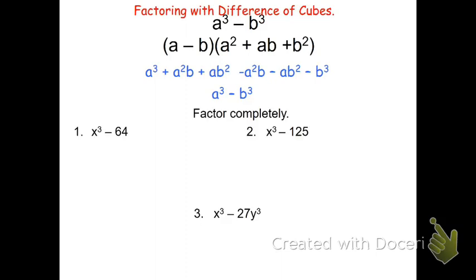I've got three problems here and I want to think about them as differences of cubes. On number one, I see x³, but -64 doesn't show me something cubed. So I've got to think of it as what cubed gives me 64. Well, I know that 4³ is 64, so this is really x³ - 4³.